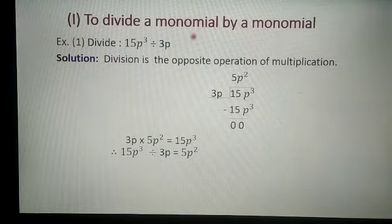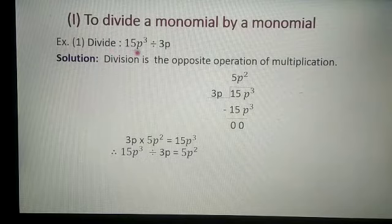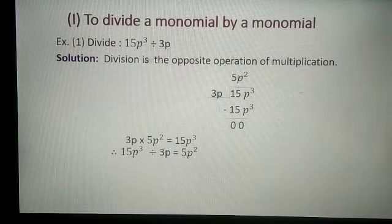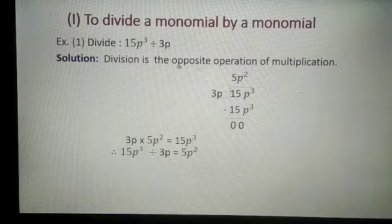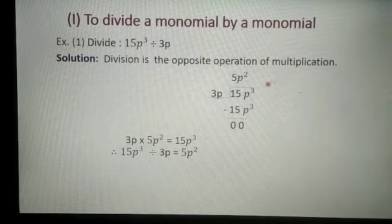Monomial means having only one term. First example: divide 15p cube by 3p. The important point here is that division is the opposite operation of multiplication.